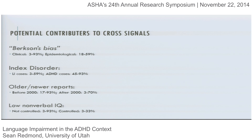There's another issue: these co-occurrence rate estimates are meaningless if we can't trust the tools we're using to identify language impairments as being capable of identifying a language impairment and not misidentifying ADHD, and vice versa. In both clinical arenas we have a wide variety of choices, and certainly measures capable of differentiating typical from atypical status — but that's a different question from identifying different kinds of atypical status.